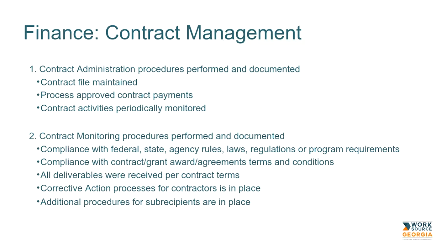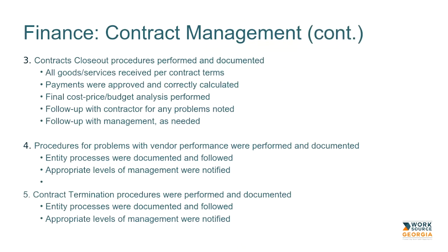Any additional procedures for subrecipients should be in place based on either the subrecipient's policies or the local policies. For close-out procedures, we're looking at whether all goods and services were received per contract terms, payments were approved and correctly calculated, a final cost-price budget analysis was performed, follow-ups with contractors for any problems were noted, and procedures for problems with vendor performance were performed and documented, with appropriate levels of management notified. Contract termination procedures should be performed and documented.